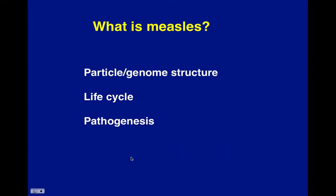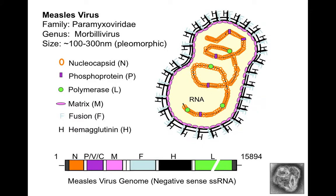What is measles? We'll look at the particle and the genome, its life cycle, and its pathogenesis. Measles virus is in Paramyxoviridae, paramyxoviruses, and its genus is Morbillivirus. If you hear either of those, you're usually going to be referring to measles or a closely related virus. The size is 100 to 300 nanometers.